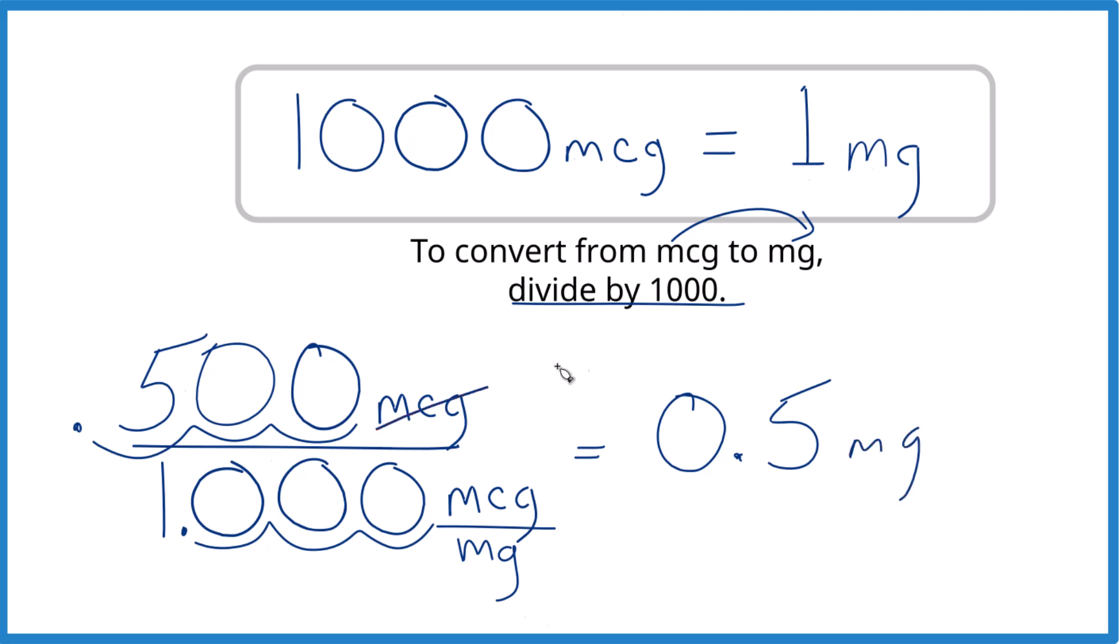And we know that it's right because these cancel out. We're left with MG. That's what we're looking for. So in answer to our question, 500 micrograms, 500 MCG equals 0.5 MG, milligrams.